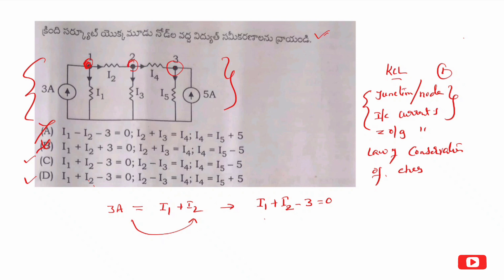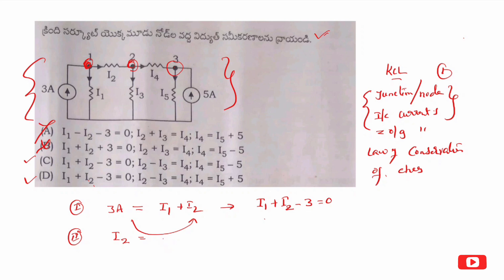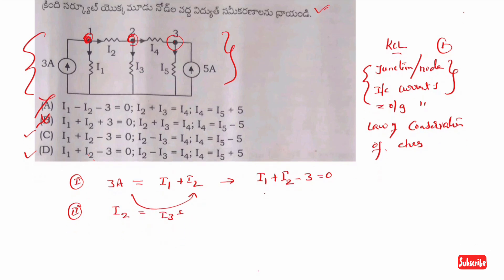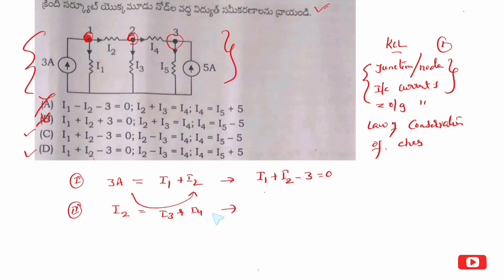Next, at node 2, the incoming current is I2 and the outgoing currents are I3 and I4. So I2 is equal to I3 plus I4, giving us I2 minus I3 minus I4 equals 0.